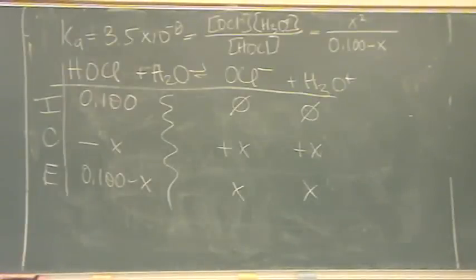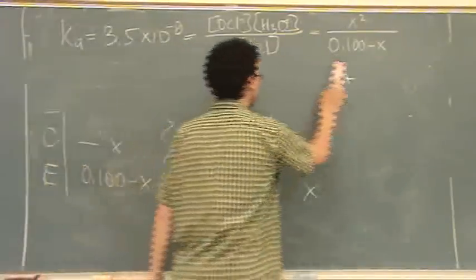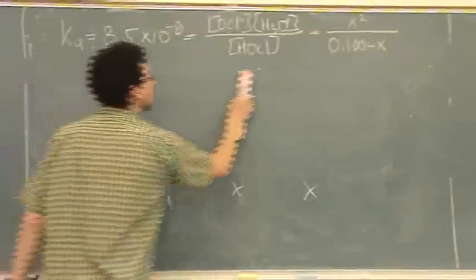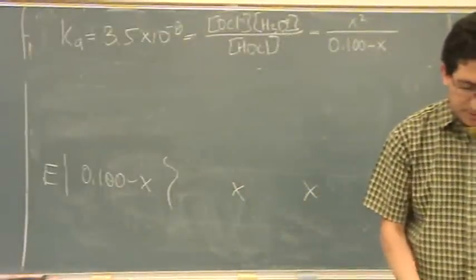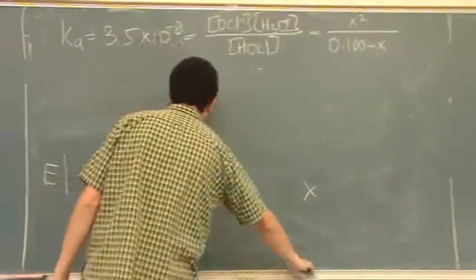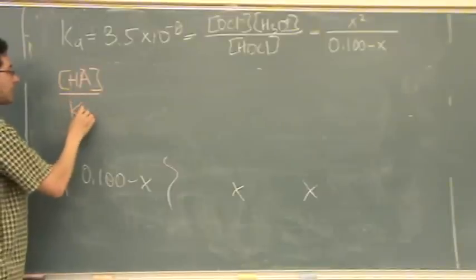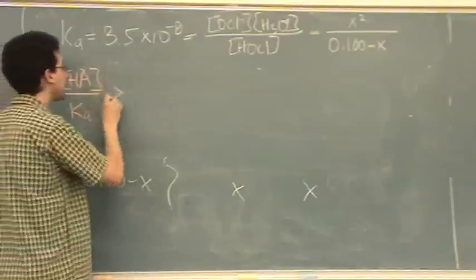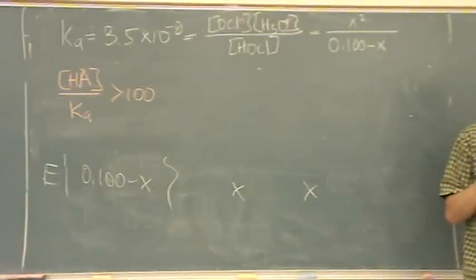And now we're back to the quadratic equation. The nice thing about acids is there's a concept you might have seen a little bit in the previous chapter that makes the problems actually much easier. When you're doing these problems, I have a little formula for you. If you notice the following, the concentration of the acid, when you divide that by K, if that is greater than 100, approximately, you can do the following trick, which makes it really easy.